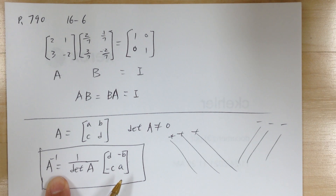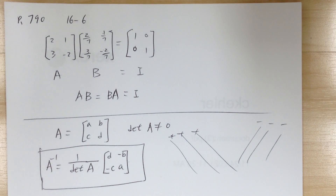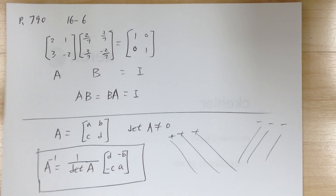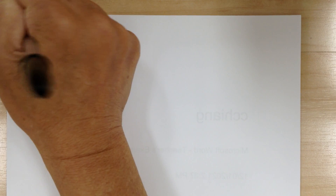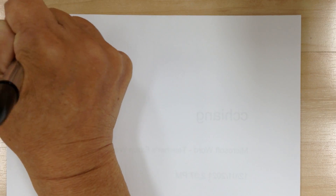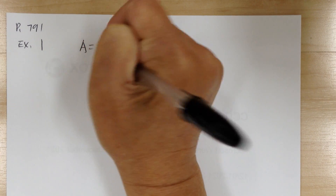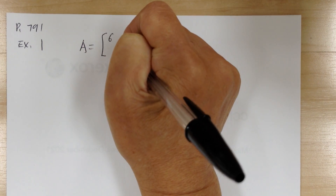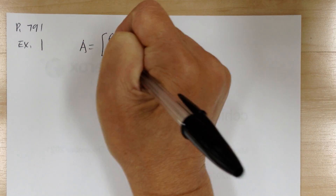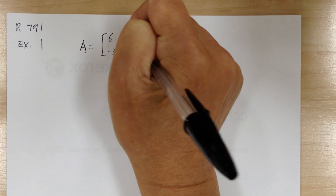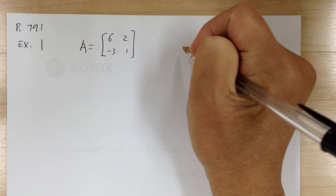So if A equals a, b, c, d, the inverse equals one over the determinant of A times the matrix where a and d are switched and b and c are negated. That is the formula for the inverse of a 2×2 matrix. Now let's go over an example to see how to use this to find the inverse.